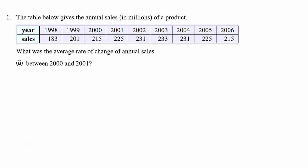It says that this table represents the annual sales in millions of dollars of a product. So notice that we've got the different years and we've got the sales amount, and these represent millions of dollars. And then it's asking what was the average rate of change of annual sales between the year 2000 and 2001. So I want you to see what this looks like in a graph, and so I went ahead and graphed it.